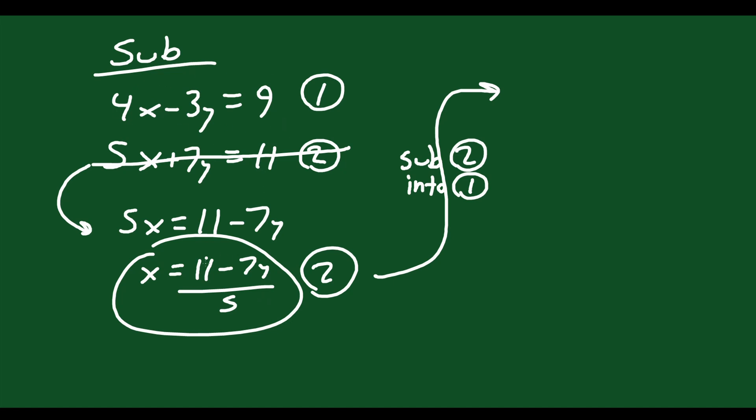So wherever I see an x in here, I'm going to replace it with this new definition. So 4 times x, but instead of x, I write this thing here: 11 minus 7y over 5 minus 3y equals 9. Now we solve for y. So you can multiply this thing here out. You'll get 4 times 11 is 44 over 5. So I'll just write 44 over 5. And then 4 times negative 7, that's negative 28y over 5. And I want a common denominator, I think. So I'm going to make that negative 3y into negative 15y over 5. And then that's equal to 9.